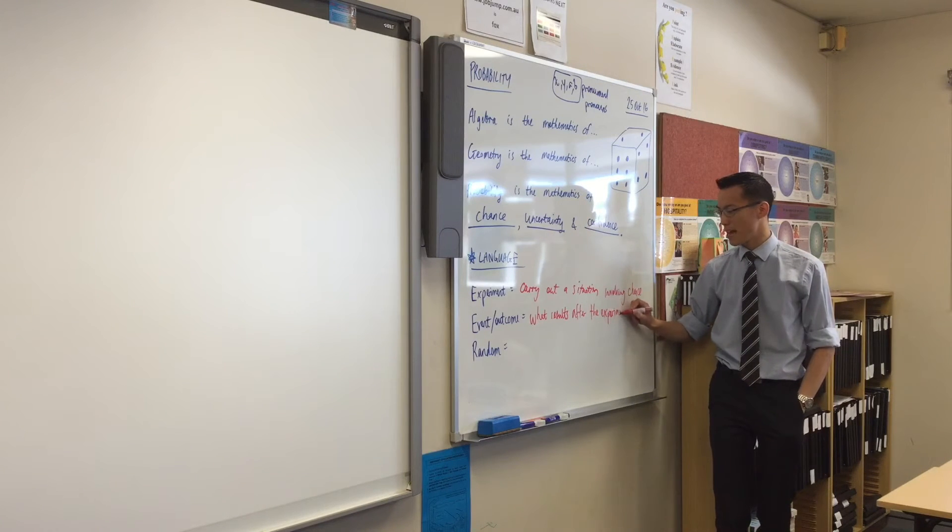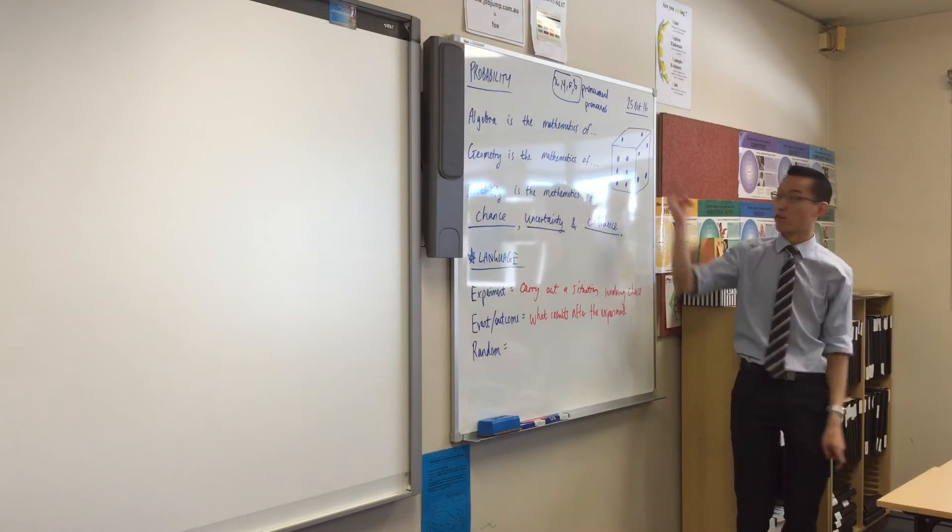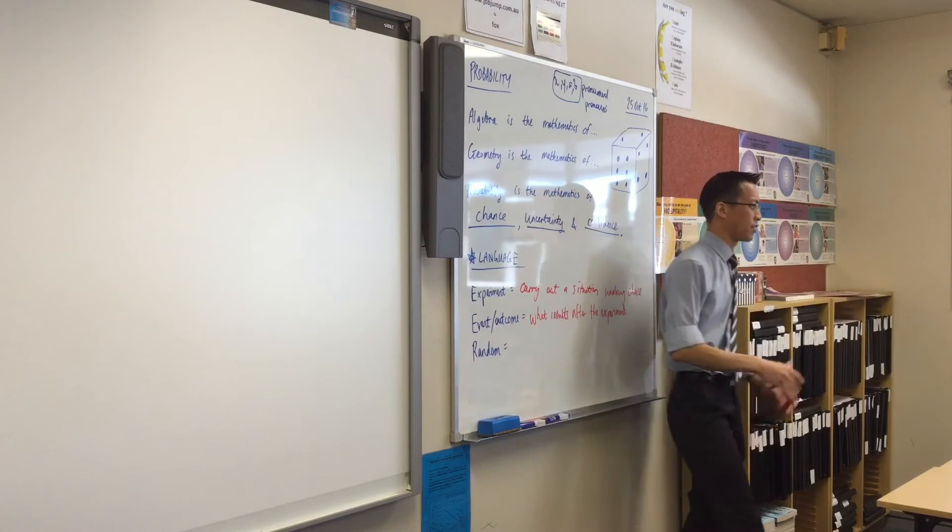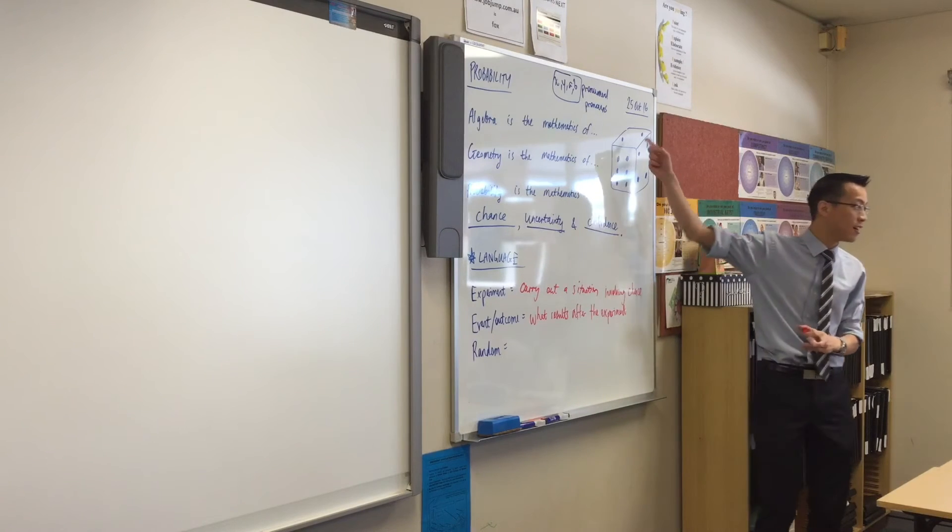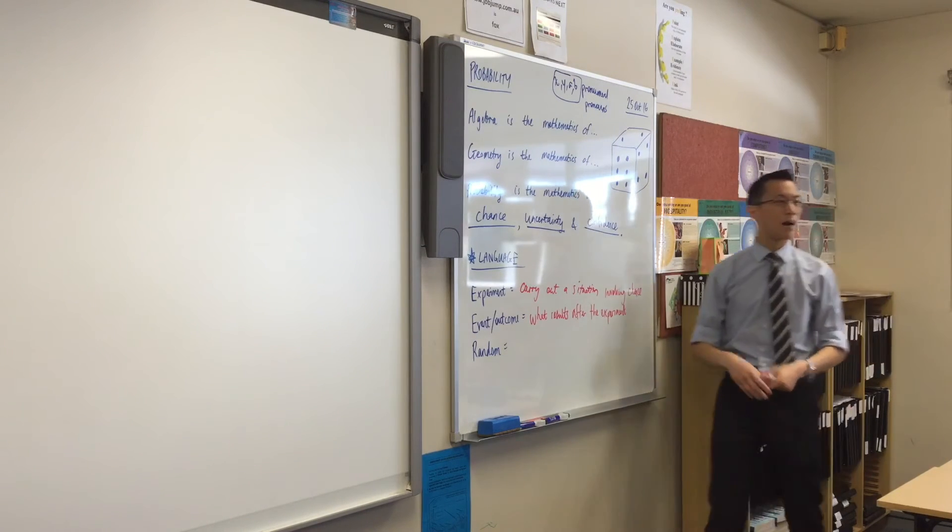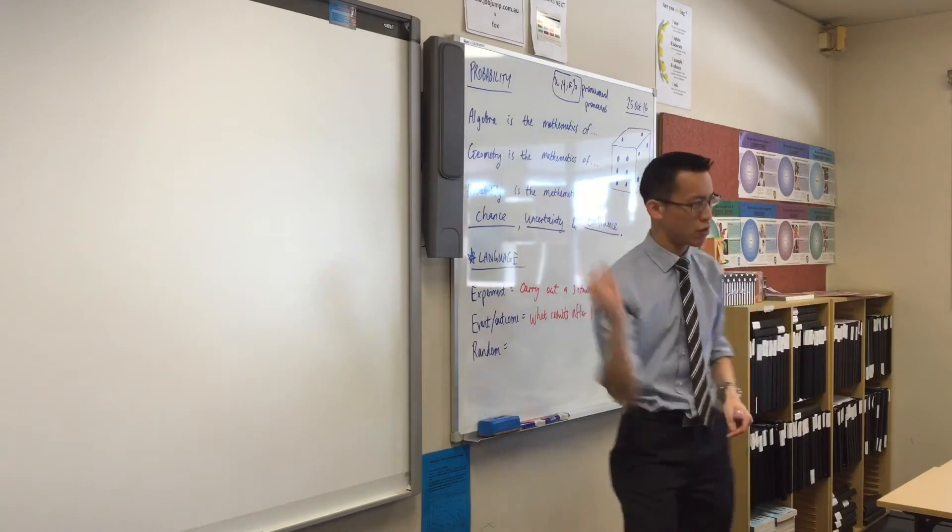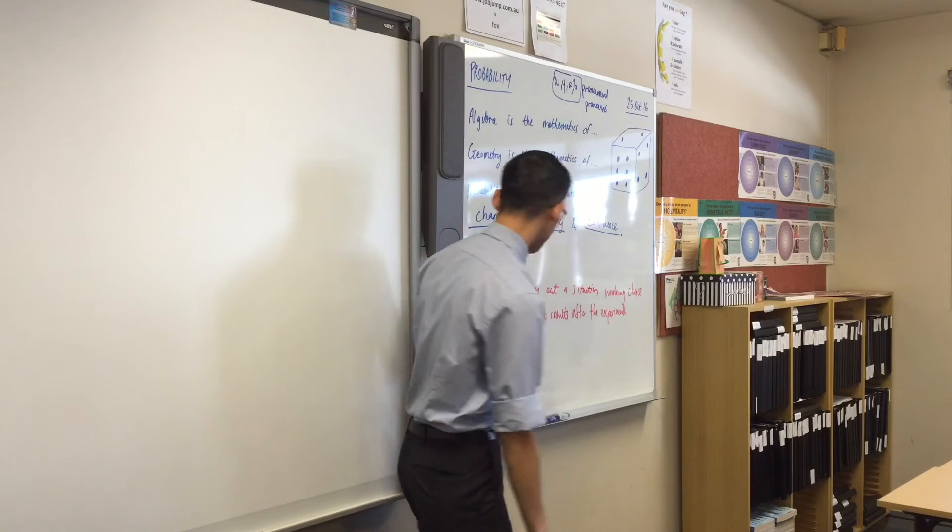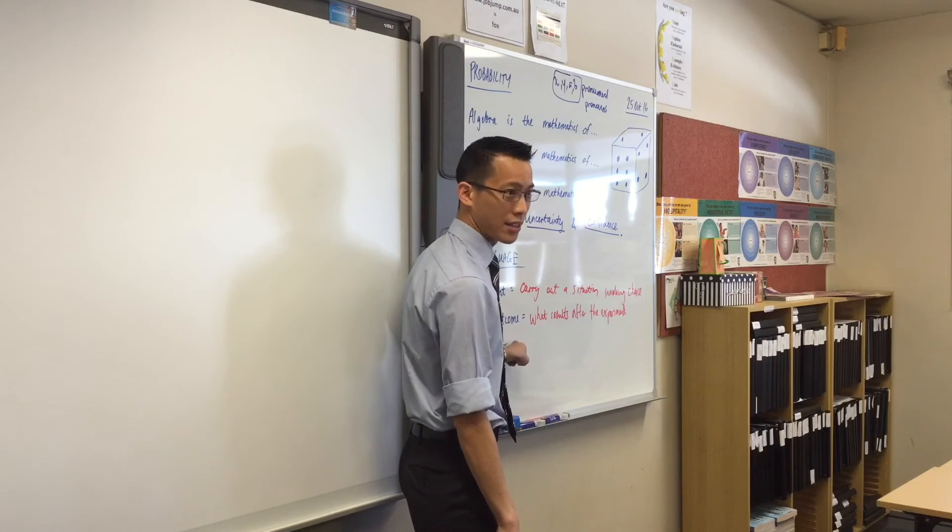So, if we want to stay with this idea, this experiment of rolling a die, right? What might be a possible event or a possible outcome that could occur? What event has occurred here? Have a look. It's a two, right? You'd call that a two. There are lots of other things that are possible. You could roll a two, or a four, or a five, or a six, etc. Okay? All of these are called events or outcomes.